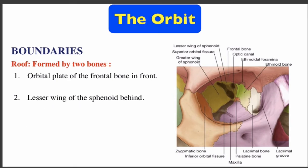The roof of the orbit is formed by two bones. Number one: the orbital plate of the frontal bone in front. Number two: the lesser wing of the sphenoid bone behind.